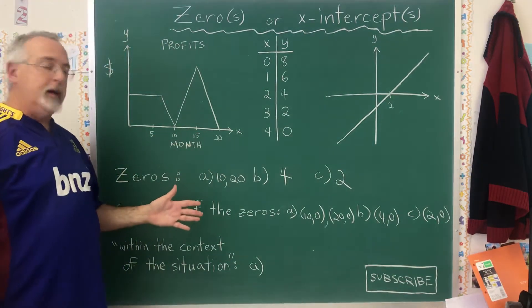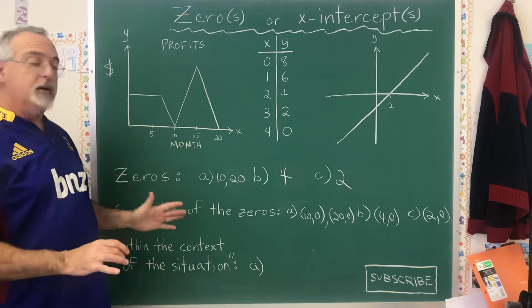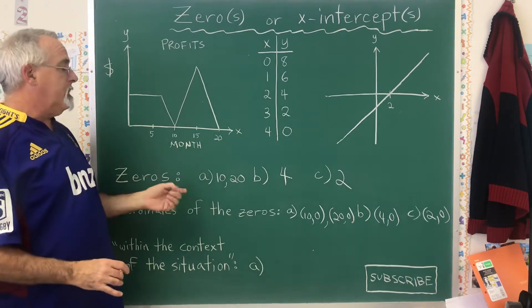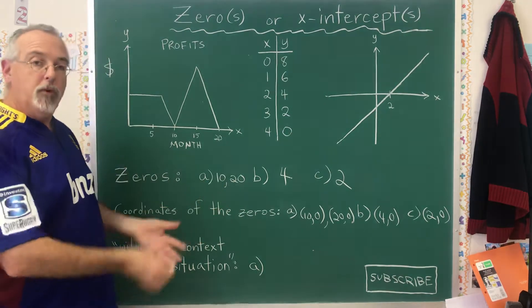There is a difference between being asked for the coordinates of the zeros, or just asked for the zeros. Be careful. When you're asked for the zeros, you only give the x-coordinates of those points.